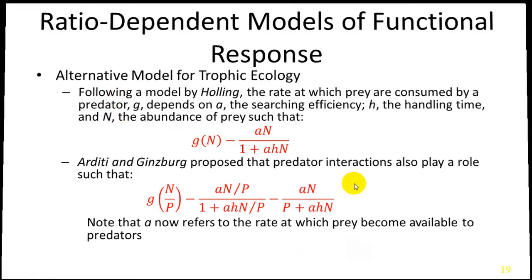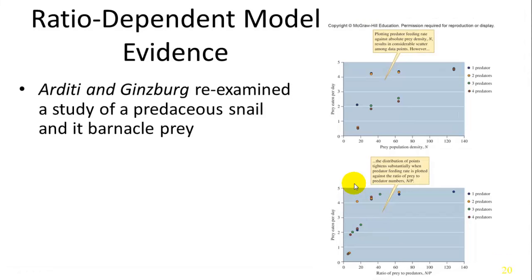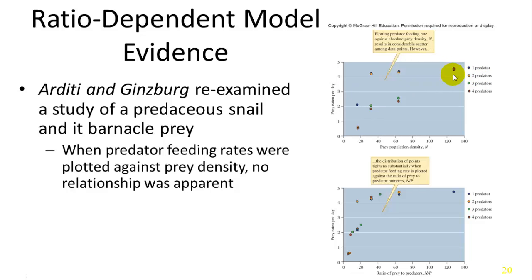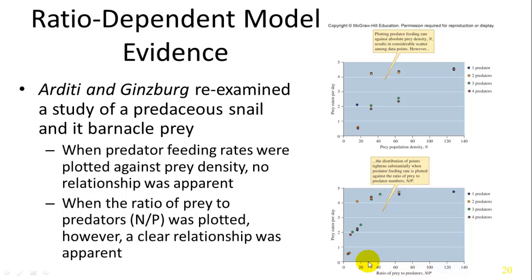Arditi and Ginzburg examined a predacious snail and its prey, a barnacle. When plotting prey population density as a function of prey eaten per day, it looked like a linear or negligible relationship. But when including the ratio of prey to predators, there was a clear saturation point — at a certain ratio, around 40 to 60, predators could not eat any more prey per day, capping at around 5, regardless of how much more prey was added.